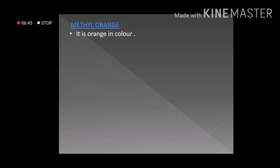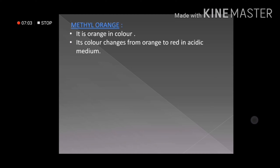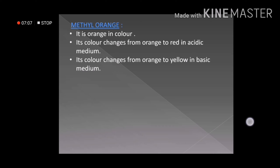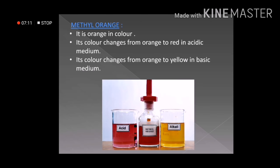Another important synthetic indicator is methyl orange. As the name indicates, its color is orange. It shows color changes in both acidic and basic mediums. If the color of methyl orange changes from orange to red, the liquid is acidic. If the color changes from orange to yellow, the liquid is basic. The figure also helps us understand the same.